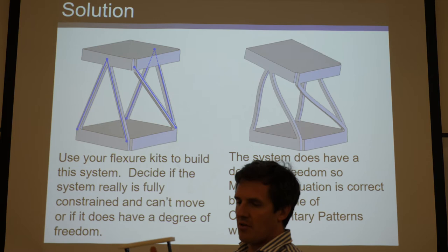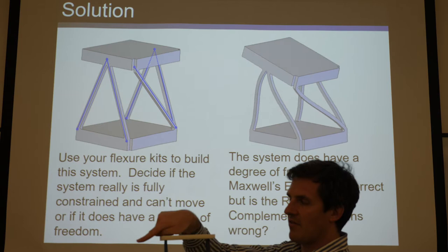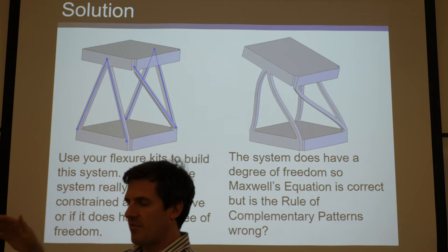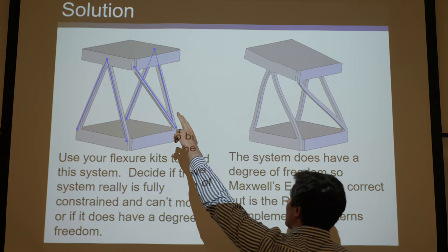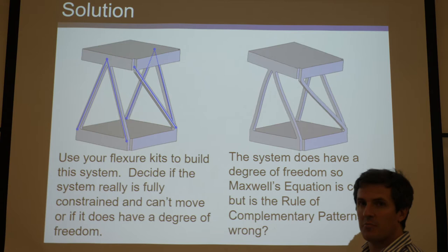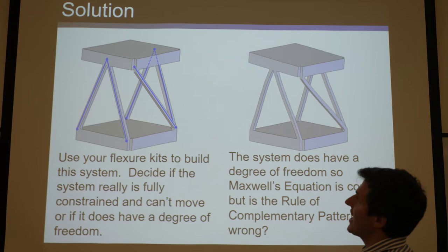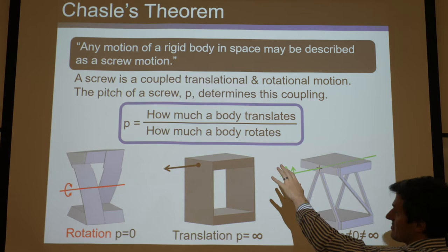Remember: if there are two or more degrees of freedom, there are infinite permissible motions. In this case that's the rotation, the translation, and screws of every pitch from negative infinity to positive infinity — that's infinite permissible motions with two degrees of freedom. But when you add the fifth non-redundant constraint, it kills the translation and the rotation. Maxwell is still right: six minus five equals one, but that one degree of freedom is this screw, coupled through its pitch.